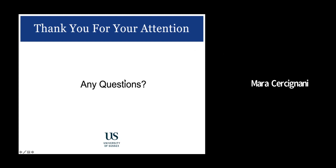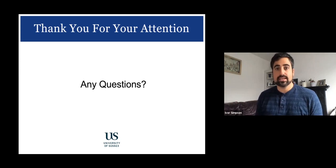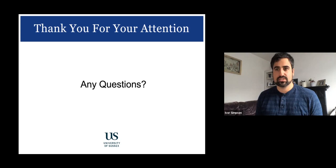An audience member asked whether these probabilistic approaches could be useful for structures other than the brain — particularly the spinal cord, where there are very few anatomical landmarks and standard registration algorithms struggle. Yes, I think so. I collaborate with Matthias Heinrich at Lübeck on similar ideas applied to the lungs, which also have few anatomical landmarks, so the approach seems relevant to try in other anatomical domains like the spinal cord.